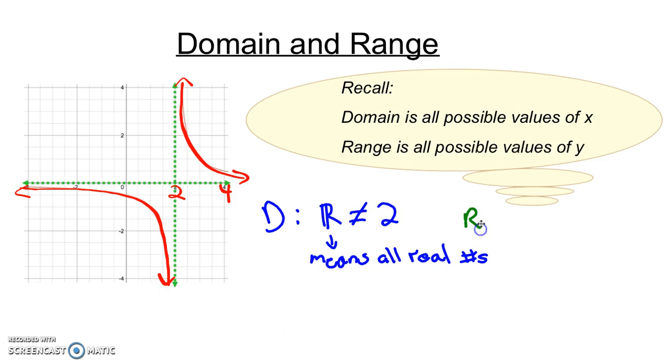Now for our range, the same type of thing is going to happen. Our graphs have arrows on the ends. Our range is all y's up to positive infinity, all y's down to negative infinity. So it's all real numbers, but something is excluded here too because we have a horizontal asymptote. What value of y is excluded because of this horizontal asymptote? I hope you said zero.